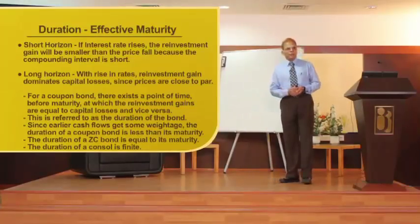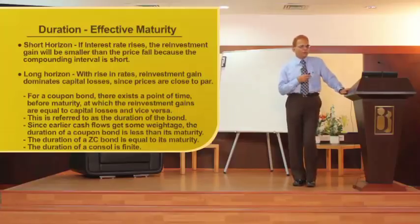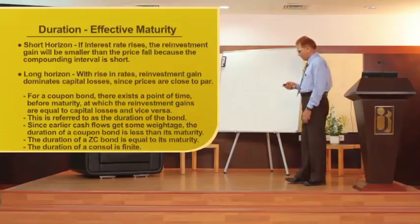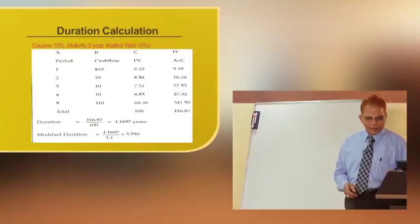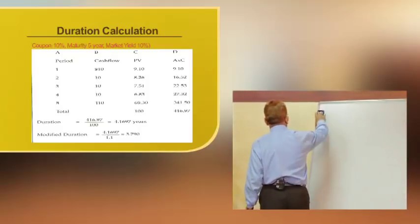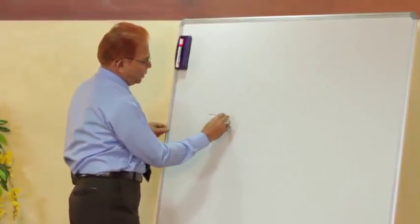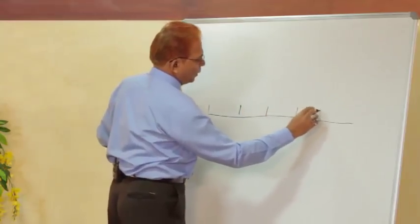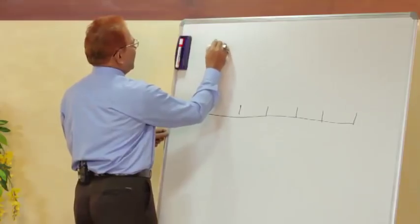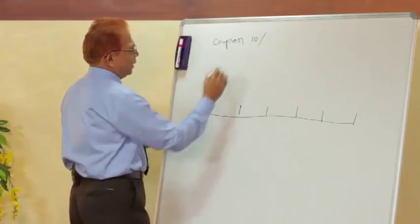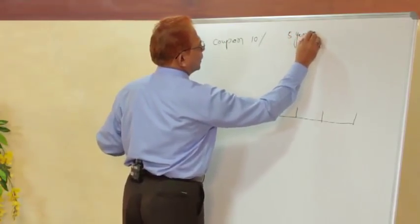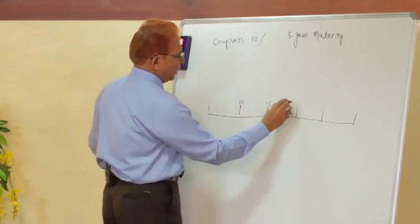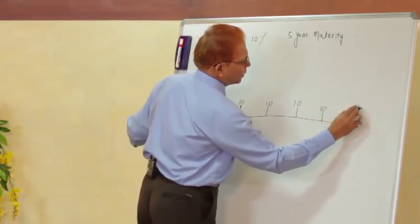The duration of a zero coupon bond is equal to its maturity, since there are no intermediate cash flows. Even a consol — a perpetual bond — has a finite duration because coupon payments occur. Consider an example: a 5-year bond with a 10% coupon, receiving cash flows of 10, 10, 10, 10, 10, and 110 (principal plus final coupon) over the five years.